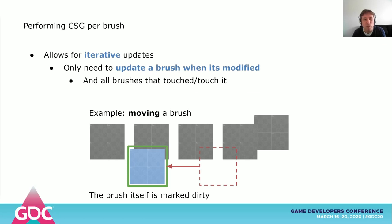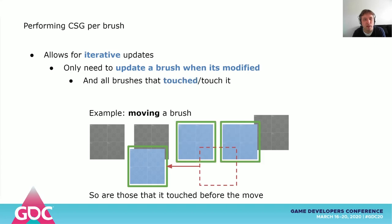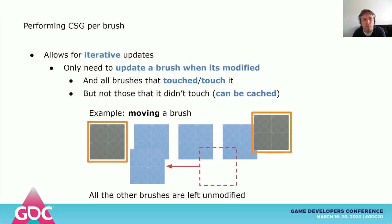Take, for example, when we want to move brushes around. Here, we only need to update the brush that was moved, the brushes it touched before the move, and those it touches after the move. All of the other brushes can be left untouched. Since we can cache the results of our per-brush CSG process, we can just reuse the previous results for those brushes. It works the same if you modify the shape of a brush instead.